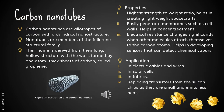Carbon nanotubes are allotropes of carbon with a cylindrical nanostructure. Nanotubes are members of the fullerene structural family. Their name is derived from their long hollow structure with the wall formed by one atom-thick sheet of carbon called graphene. Properties of carbon nanotubes include a higher strength-to-weight ratio which helps in creating lightweight spacecraft, and they can easily penetrate membranes such as cell walls to help in cancer treatment. Their electrical resistance changes significantly when other molecules attach to the carbon atoms, helping in sensors that can detect chemical vapors. Applications include electric scalpels and wires, solar cells, fabrics, and replacing silicon transistors as they are small and emit less heat.